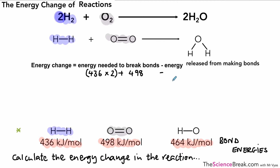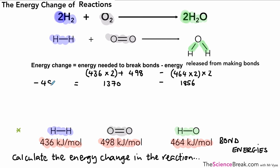Then we need to look at the energy released from making the bonds — that's the bonds in H₂O. We've got H–O bonds, and in H₂O you can see we've got two of them. So for every molecule of water, we've got two H–O bonds, so that would be 464 times 2. But be careful because we've got two H₂O molecules, so we need to multiply by 2 again. If we do our calculation, we find we have 1370 minus 1856, which gives us minus 480. That minus for the final answer indicates to us that this is an exothermic reaction.